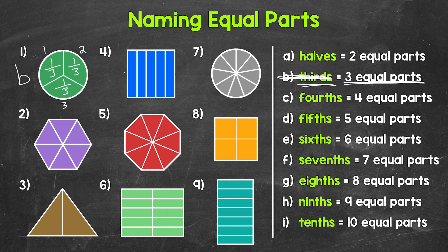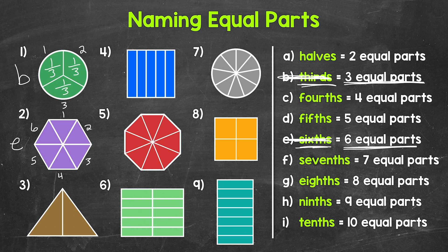Number 2: this whole has been divided into 1, 2, 3, 4, 5, 6 equal parts. We call 6 equal parts sixths. So let's put an E next to number 2 and cross off sixths. Now each one of those equal parts is 1 sixth of the whole.